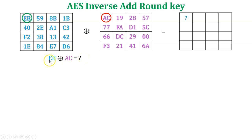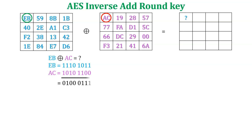Here both values are in hexadecimal format. We cannot perform XOR operation directly with hexadecimal values, so we have to convert both hexadecimal values into binary format. The binary value of EB is 1110 1011, and the binary value of AC is 1010 1100. Performing XOR operation on these binary values gives the result 0100 1111.